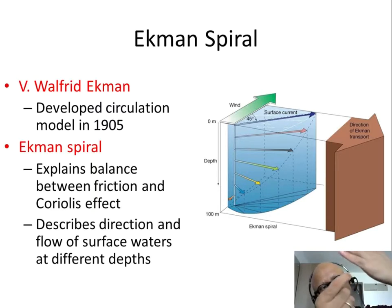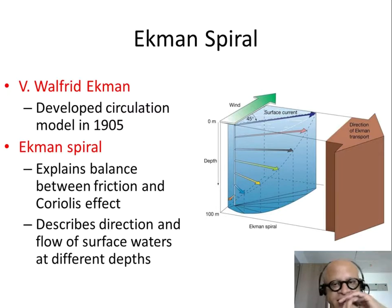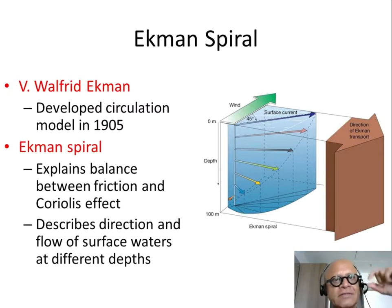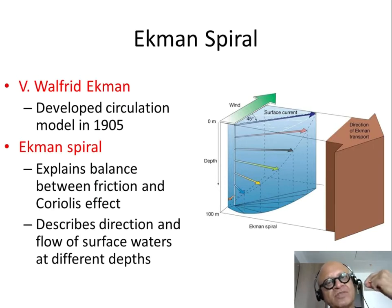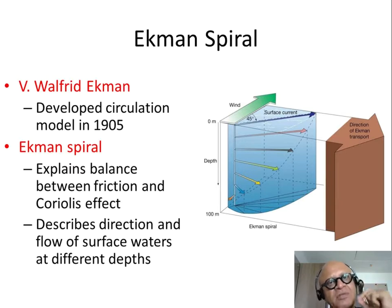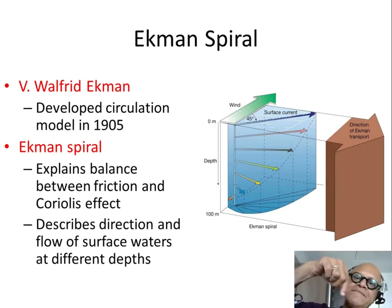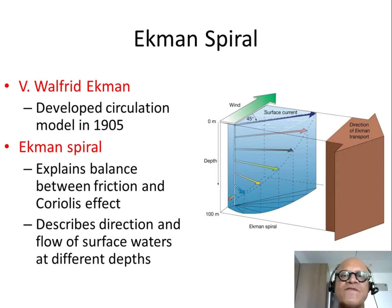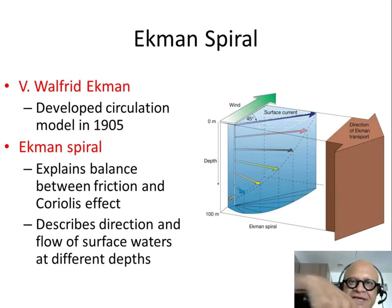If the current is trying to pull the layer below it, Coriolis is going to push that layer to the right in the northern hemisphere. Below that, the second layer will pull the water below, and that water moves away from the second layer, the fourth layer is pulled by the third, the fifth by the fourth, and so on. Eventually, at the bottom, water can be moving against the direction of the surface water — creating this spiral as you go down.